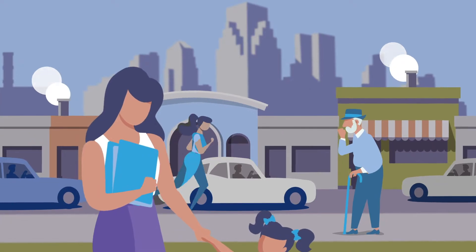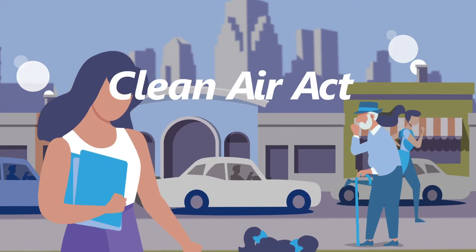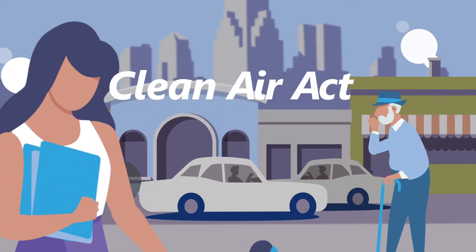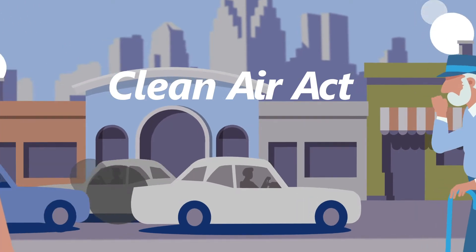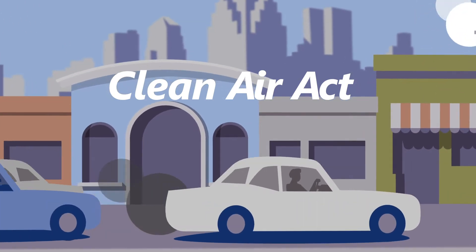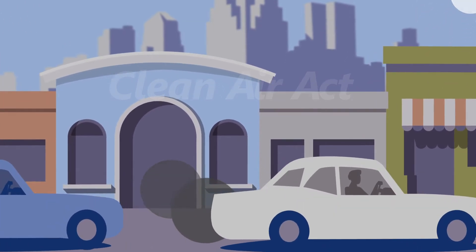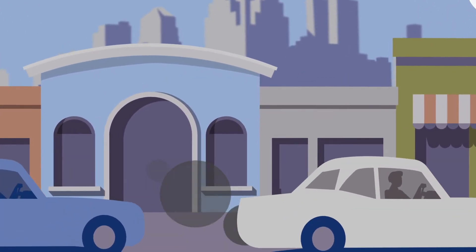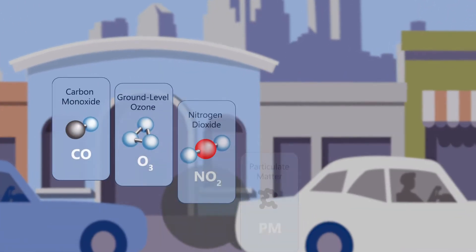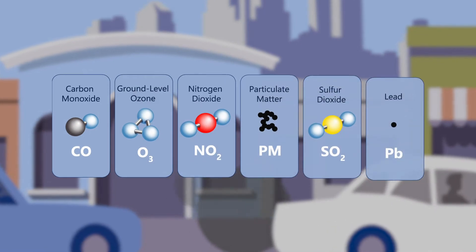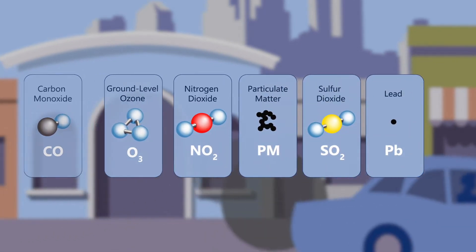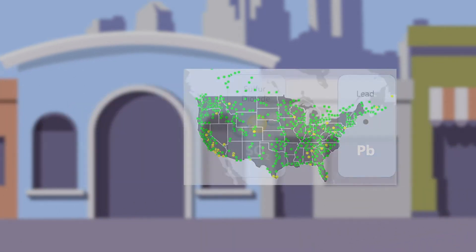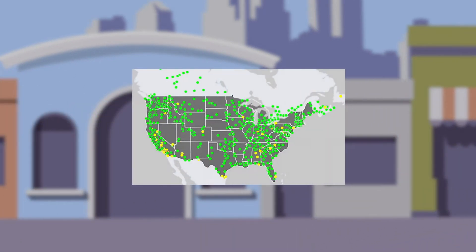The Clean Air Act is a federal law that allows EPA to regulate emissions and set air quality standards, for example, for six harmful air pollutants known as criteria pollutants. Each state in the U.S. must meet these standards.